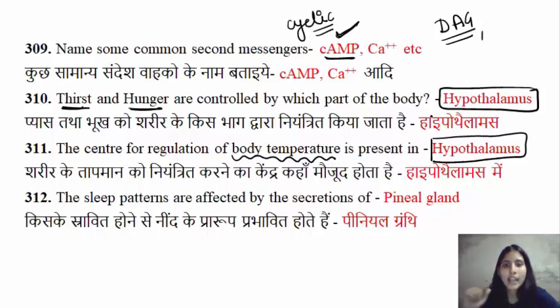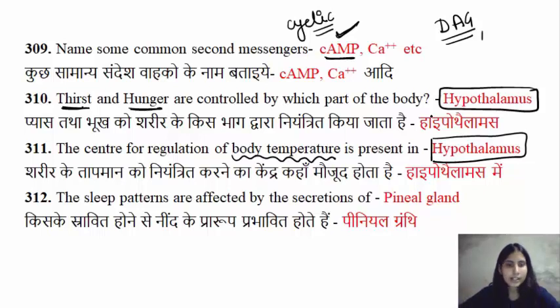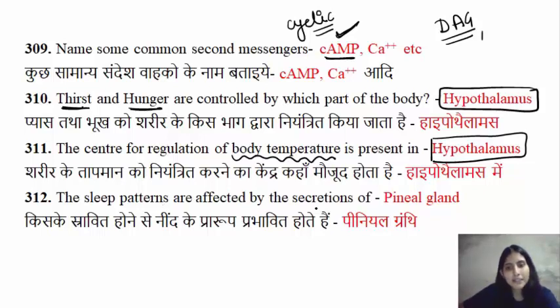So these three important centers are in the hypothalamus: thirst center, hunger center, and the body temperature regulation center.